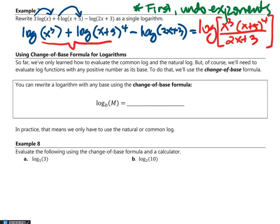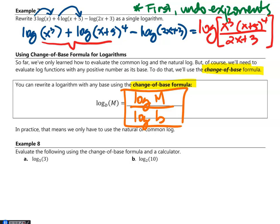So far we've only evaluated common log and natural log, but we need to evaluate log functions with any positive base. We use the change of base formula: log base b of m equals log m over log b (base 10), or equivalently ln m over ln b. If you don't see a base written, the base is 10.